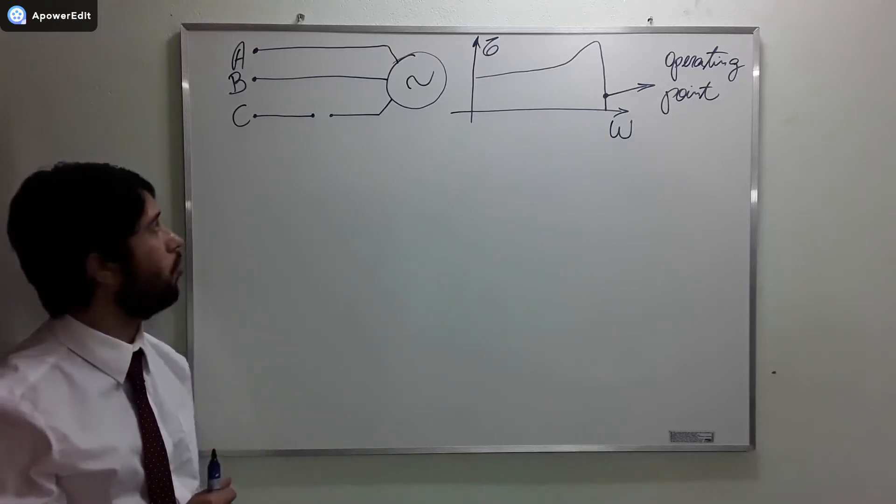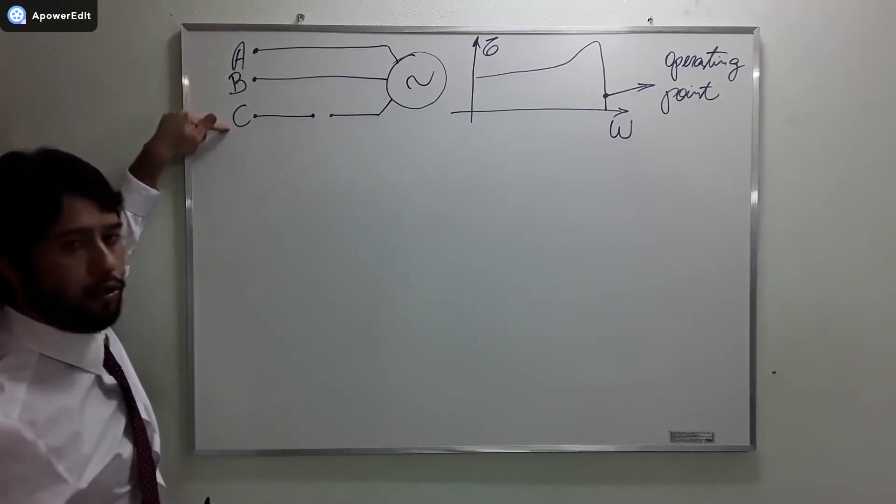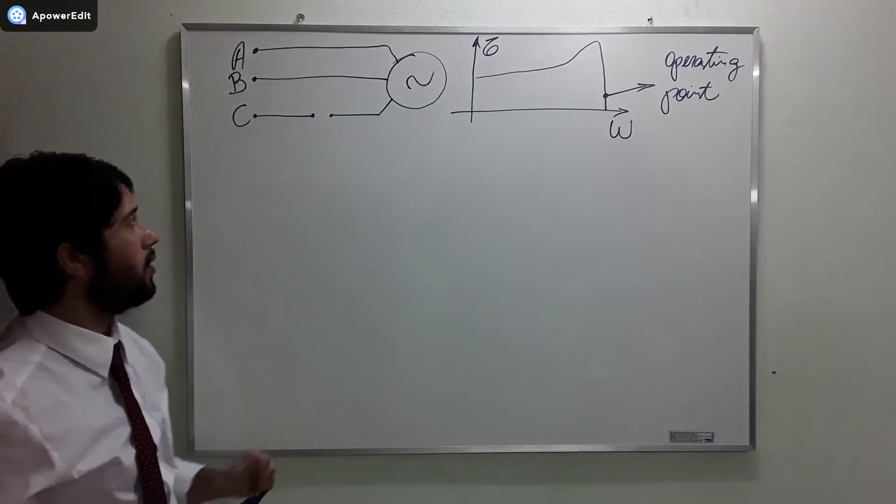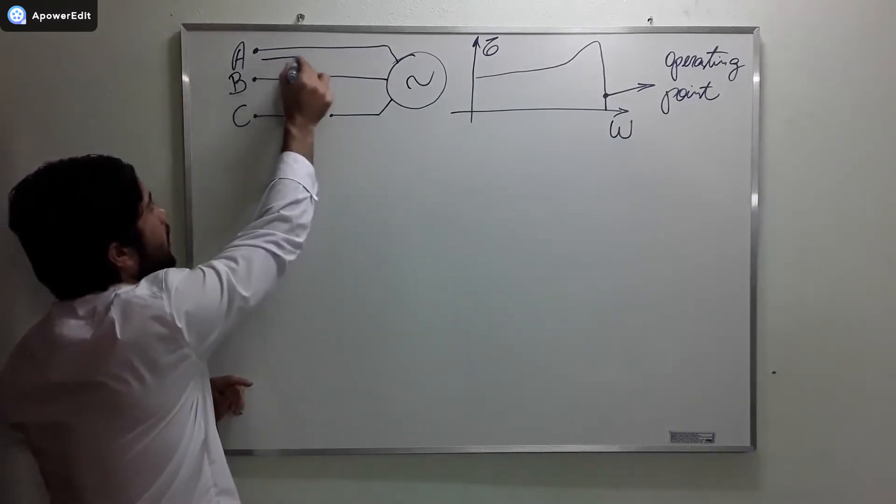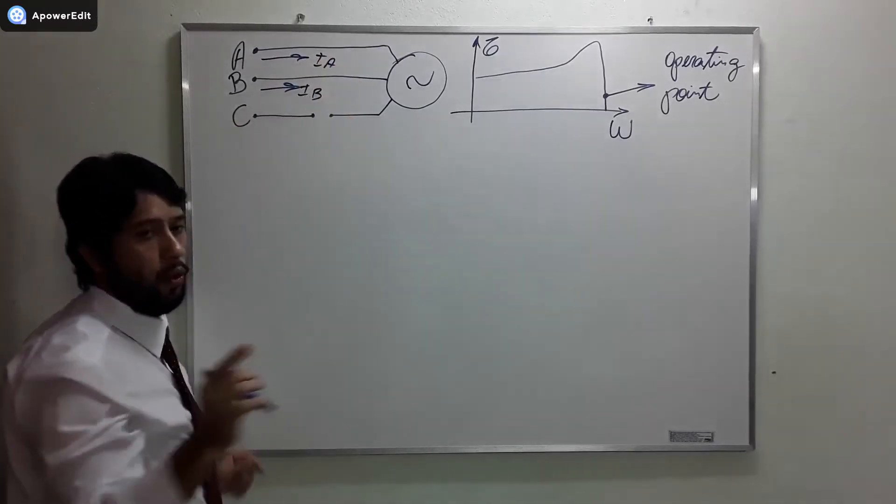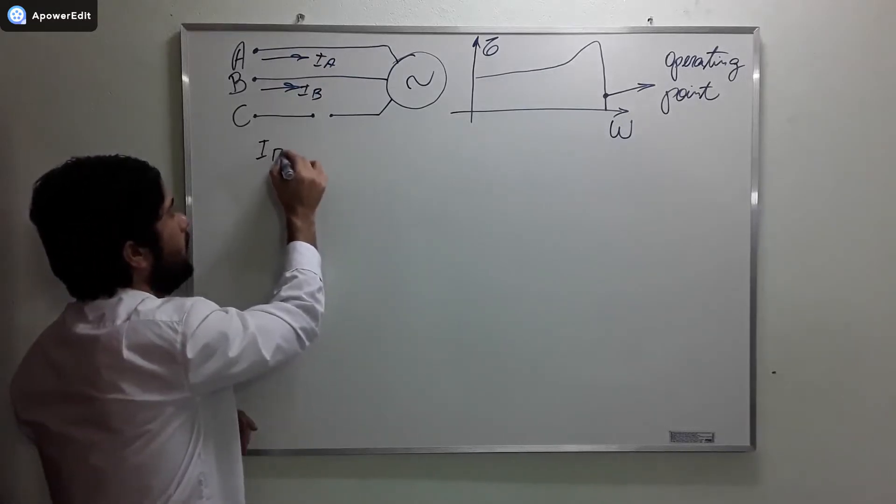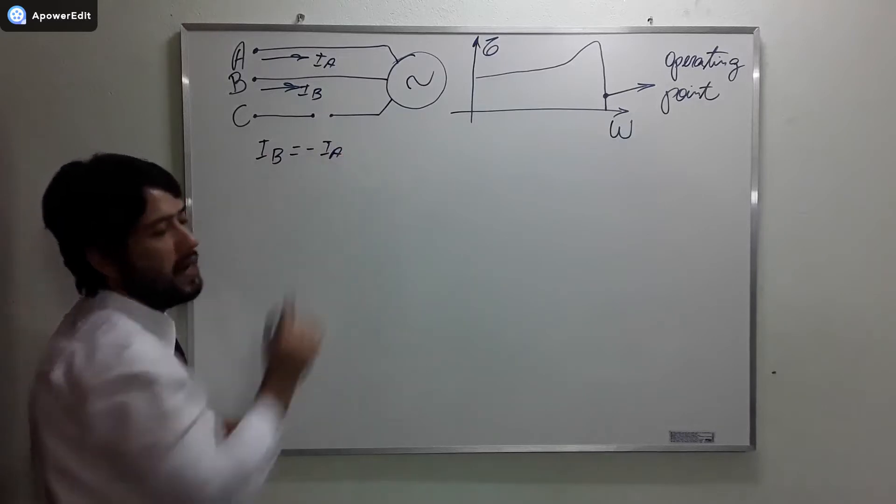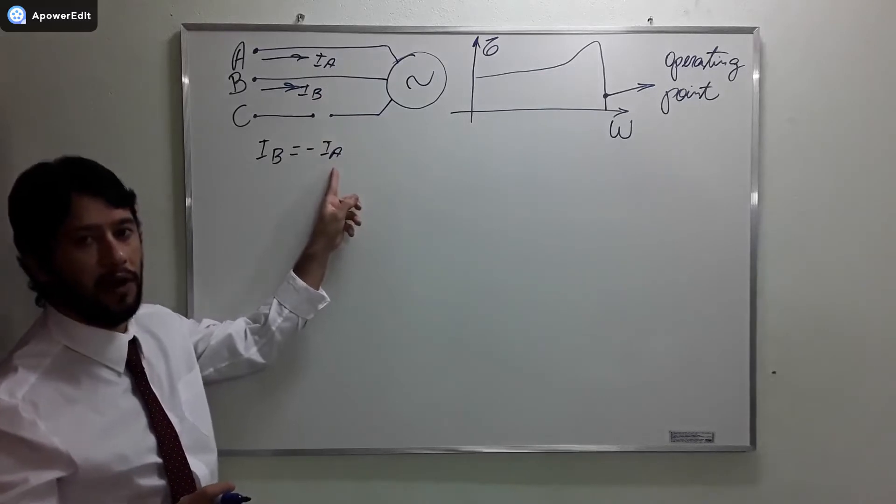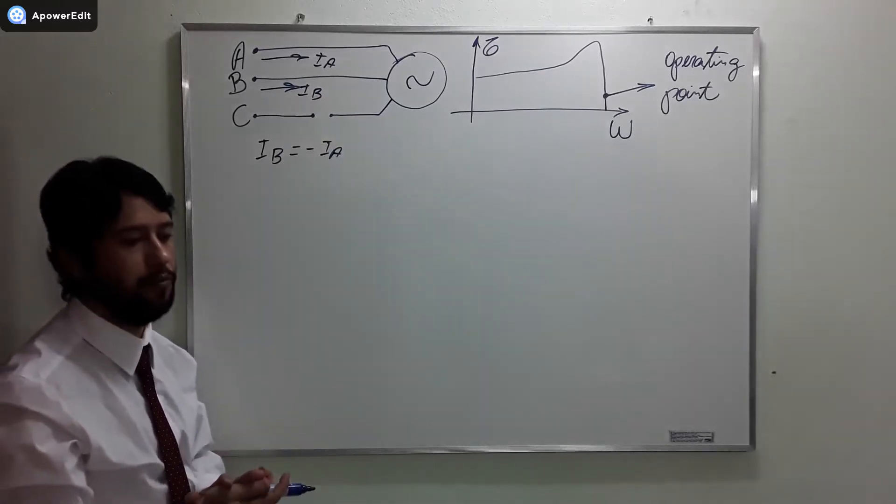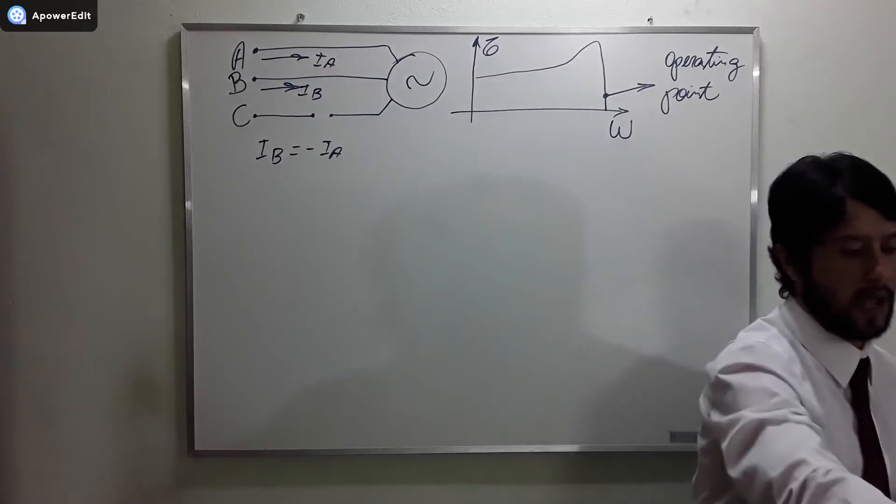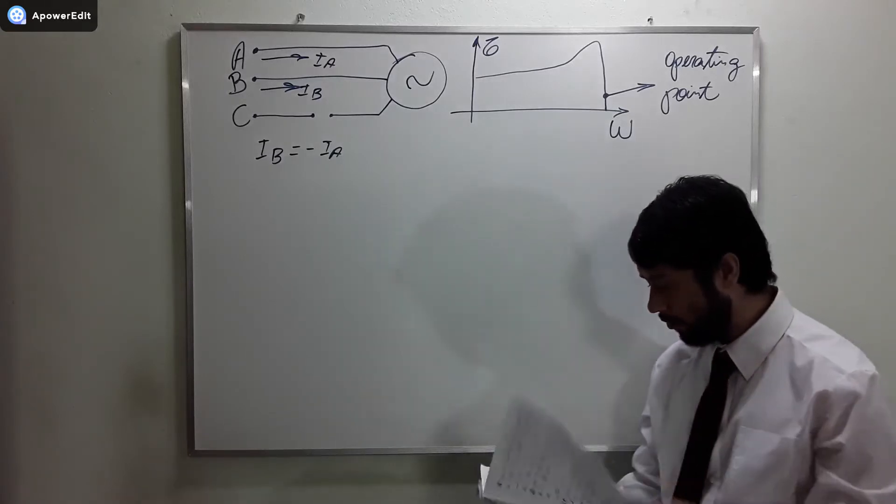Why do I say single-phase motor? Because when I have three phases, the motor behaves as a three-phase motor. But if I lose phase C and I have only current IA and IB, we can prove that IB is going to be the return of IA and the motor is behaving as a single-phase motor. This helps us understand what's going to happen after we lose one phase.